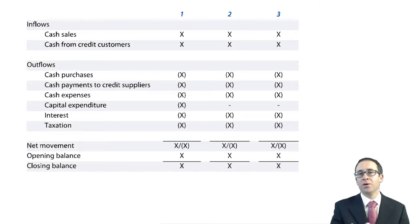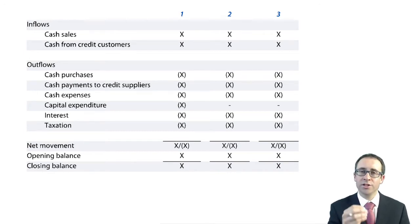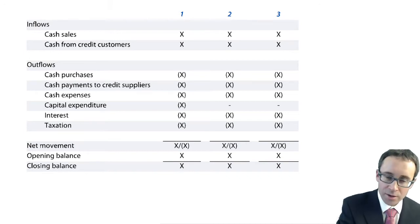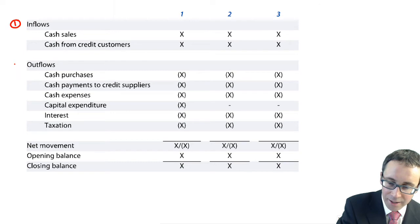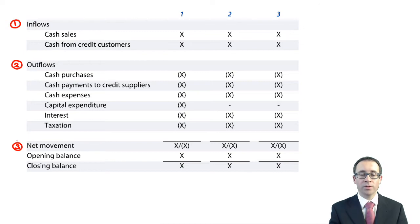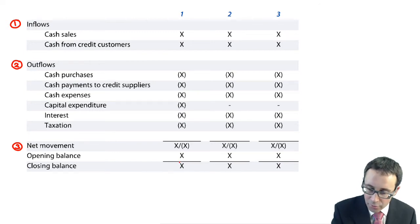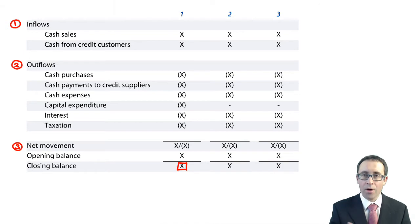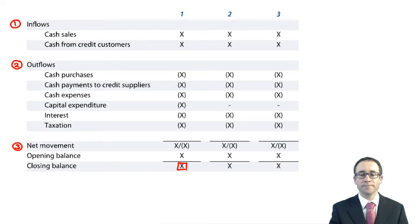Remember, the cash flow statement looked at the operating, investing and financing activities — none of that here in your cash flow forecast. This is purely a management accounting exercise. We look at the inflows, we deduct the outflows to get the overall movement and cash balance. Once you've got the movement, you can work out the closing balance and determine whether you have a surplus or a deficit of funds.